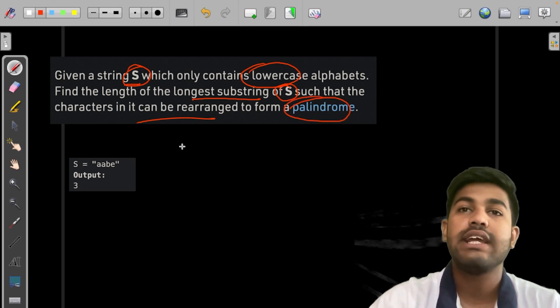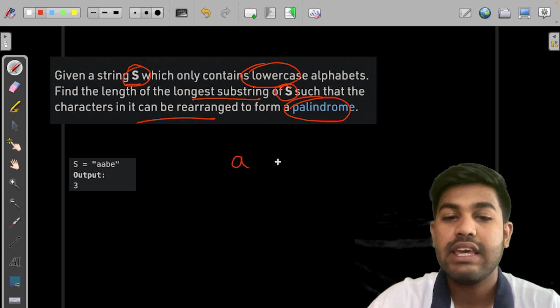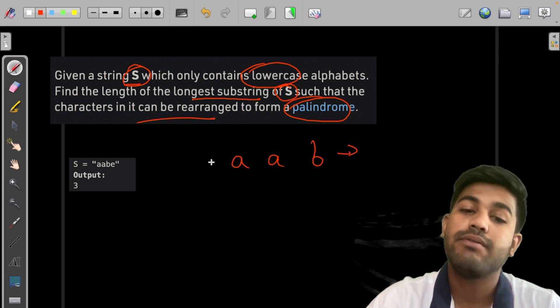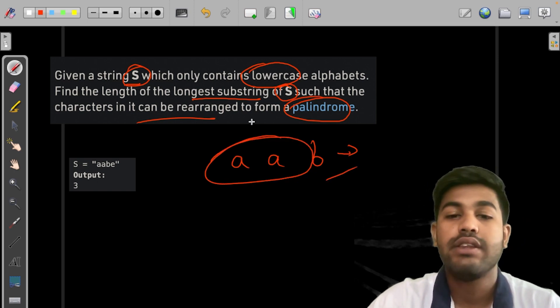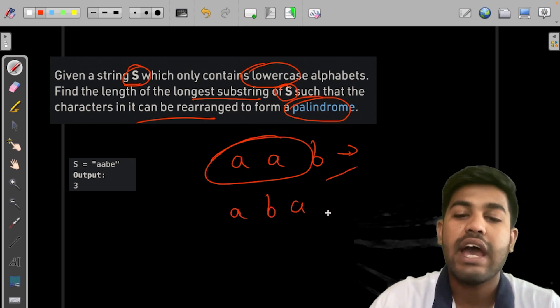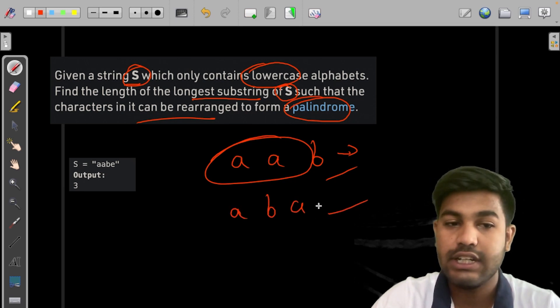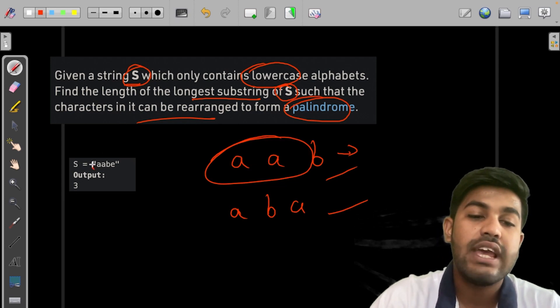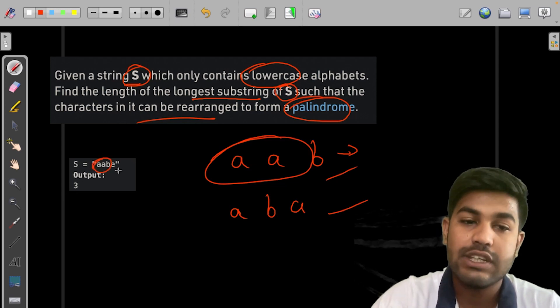So basically even if it is a, a, b then it would be considered as a valid candidate for this. Why? Because it can be rearranged to a, b, a and form the palindrome. This is what is needed. Now we can say that this is a valid sequence. That is why the output to this is 3 itself.